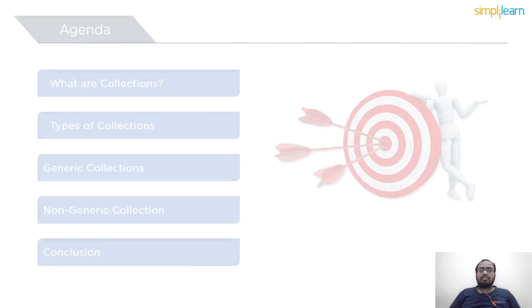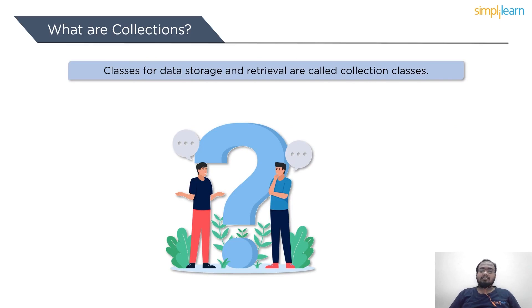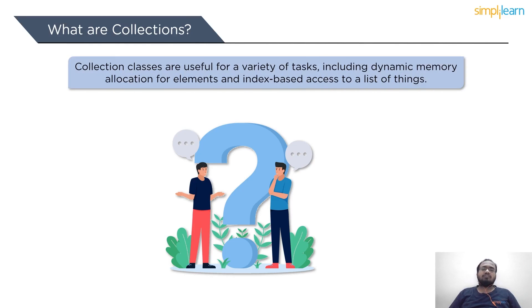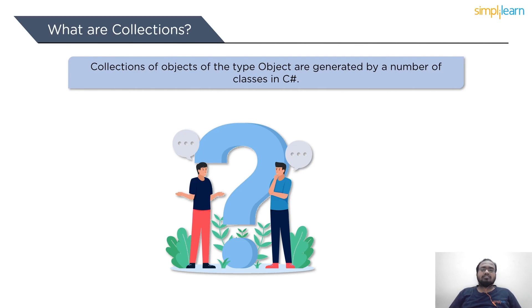So let's get started with the discussion on what are collections. Collection classes are specialized data storage and retrieval classes. Stacks, queues, lists, and hash tables are all supported by these classes. Collection classes perform a variety of functions such as dynamically allocating memory to components and retrieving a list by objects by an index, among others. These classes construct collections of objects which serve as a foundation for all data types in C-sharp.